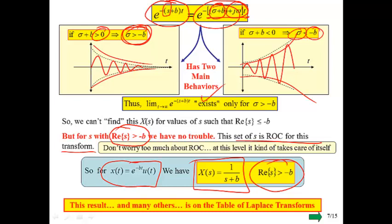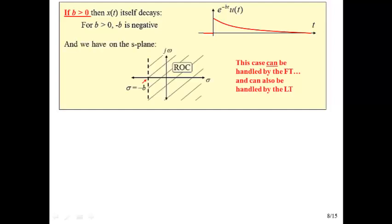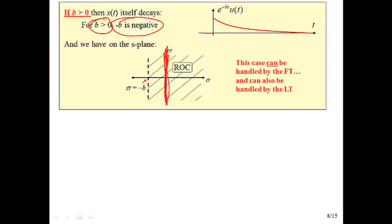Just like we've had for all our other transforms, we have a table of Laplace transforms to deal with these without doing all this math. To summarize: if b is greater than zero, the signal decays and we can handle it with both the Fourier transform and the Laplace transform. On the s-plane, if we draw a vertical line at sigma equal to minus b — which is to the left of the j-omega axis — the region of convergence is everything to the right. For this scenario, the region of convergence includes the j-omega axis, which will be important shortly.